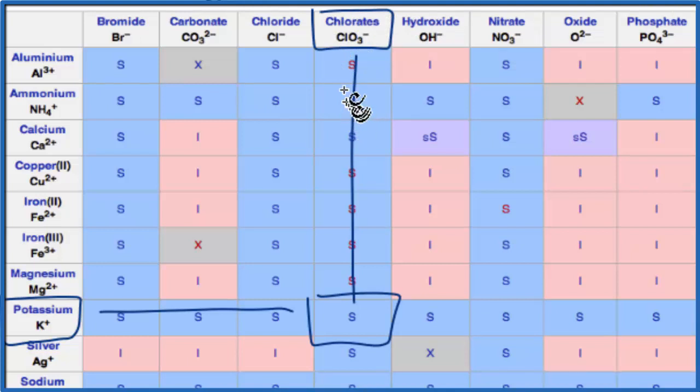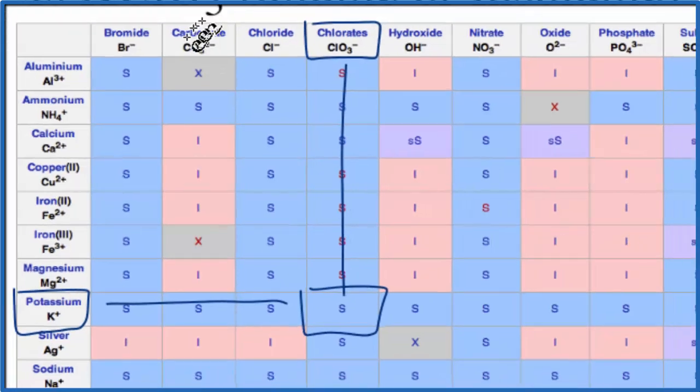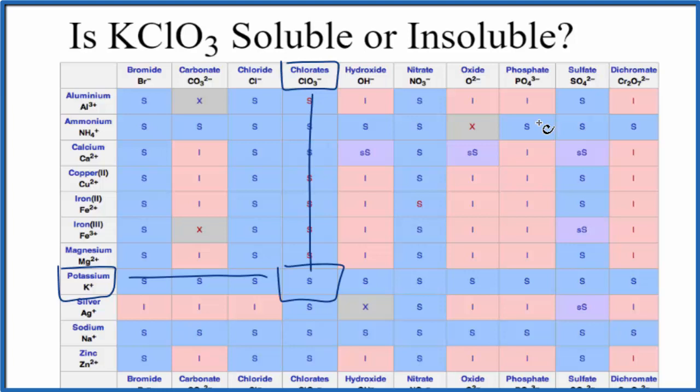There's one more way we can tell whether KClO3 is soluble or insoluble. And that's just to get some and put it in water. Observe what happens. Based on the chart here, and based on the solubility rules, we'd expect that it would be soluble. This is Dr. B answering the question whether KClO3 is soluble or insoluble in water. It is soluble. Thanks for watchin'.